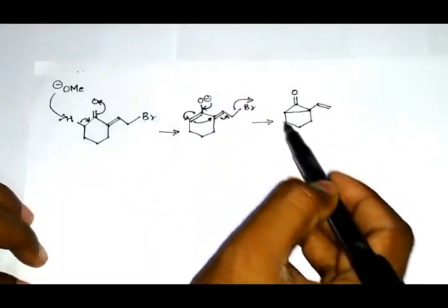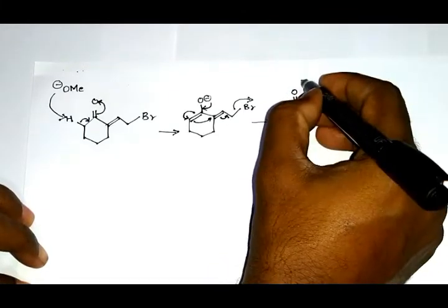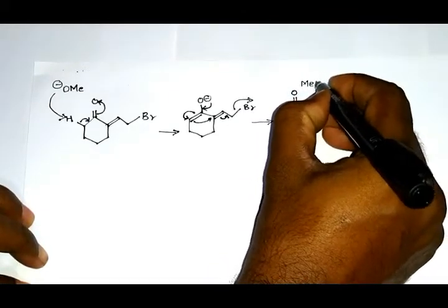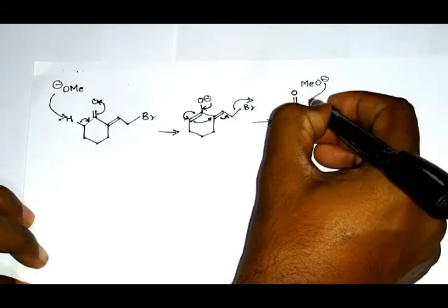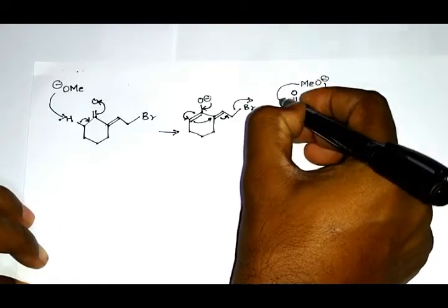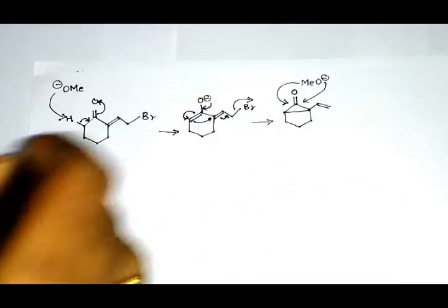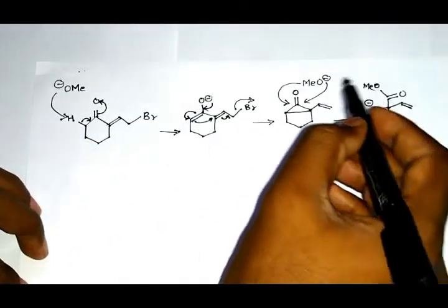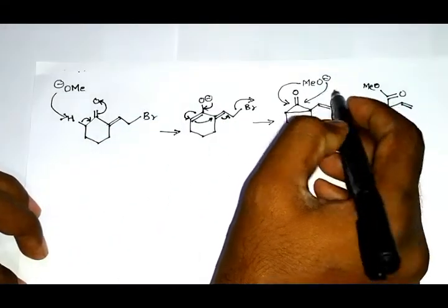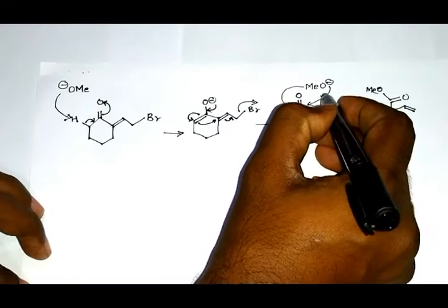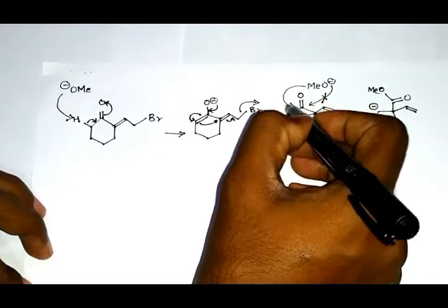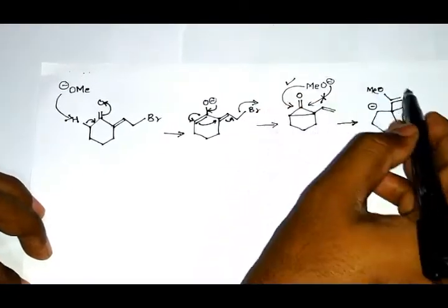Now the methoxide ion can attack this side or it can attack this side. This side attack of the methoxide ion is not preferred, but this side attack is preferred, leading to the formation of this product.